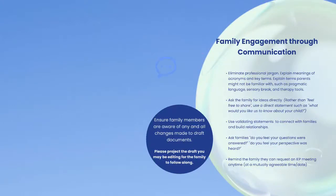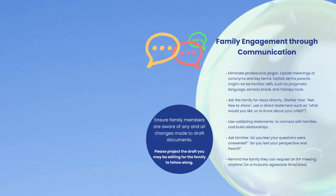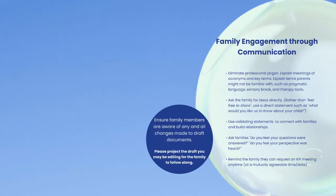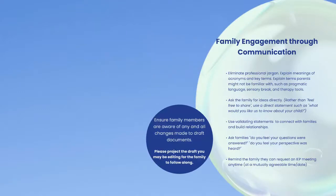Eliminate professional jargon and explain the meanings of acronyms and key terms used in education — things like pragmatic language, sensory breaks, and different therapy tools. Ask the family for ideas directly rather than telling them; use a direct statement such as, 'What would you like us to know about your child?' Use validating statements to build relationships. Ask families, 'Do you feel your questions were answered and your perspective was heard?' Remind them they can request an IEP meeting anytime. Ensure families are aware of any changes to draft documents, and project the draft document for the family to follow along in real time.